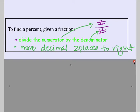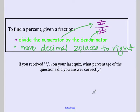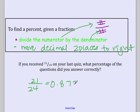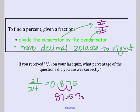Let's go ahead and look at an example. If you received a 21 out of 24 on your last quiz, what percent of the questions did you answer correctly? On your calculator, if you take 21 divided by 24 you will get 0.875. This is the answer as a decimal, but we would like it as a percent. So you move it over two places and it's 87.5 percent. That would have been your quiz score: 87.5 percent.